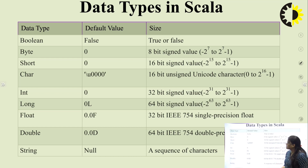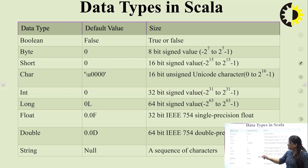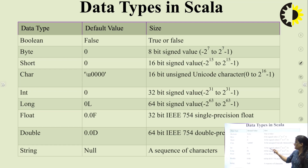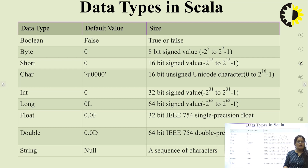The data types used in Scala are: Boolean, Byte, Short, Char, Int, Long, Float, Double, and String. Notice that the first letter of each type is capitalized. Int takes 32-bit signed values and Long takes 64-bit signed values, same as Java.